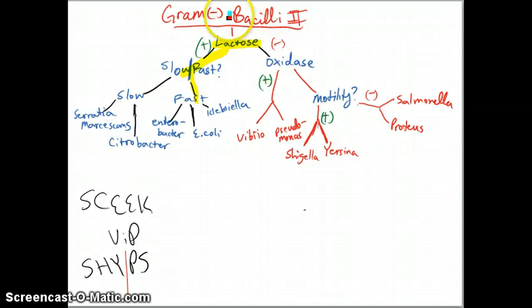What about if you're lactose negative? Well, if you're lactose negative, we can't see if you're slow or fast processor of lactose. So what we're going to do is see if you do oxidase or not. For oxidase, you have the V and the P out of your VIP SHIPS. We have Vibrio. Vibrio, you can get the vulnificus form, which is caused by shellfish, and it will cause cellulitis or septicemia. Or you can get Parahemolyticus, Vibrio parahemolyticus. That's caused by seafood and causes watery diarrhea.